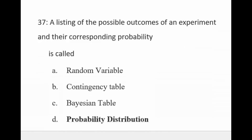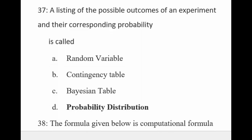A listing of the possible outcomes of an experiment and their corresponding probabilities is called: random variable — no; contingency table — no; business table — no; it is a probability distribution.